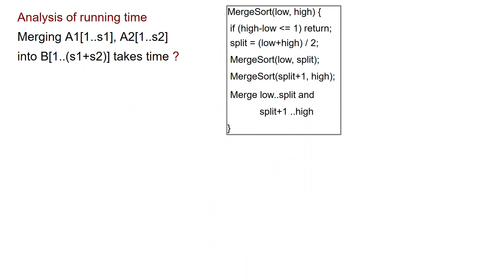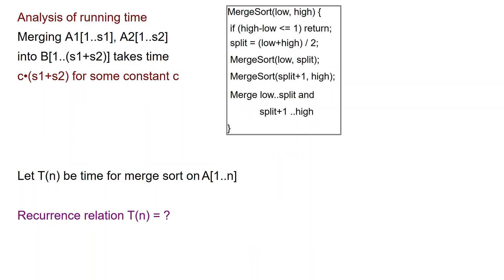We now need to analyze the running time of merge sort. Let us start with the running time of the merge operation. How long does it take to merge A1 and A2 into B? An inspection of the pseudocode reveals that this takes time linear in the combined length of A1 and A2, so it is O(S1 + S2). For later purposes, I will write this as C times (S1 + S2) for some constant C. Given this bound for the merge operation, I can now write a recurrence relation for the running time of merge sort.